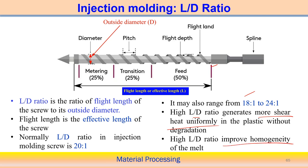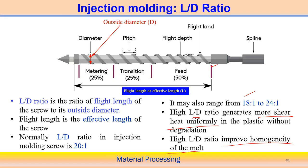The L/D ratio also improves the homogeneity of the melt — a higher value helps maintain uniform shear heating and uniform melting. The screw has three zones: the feeding zone accounts for about 50% of the total length, the transition zone around 25%, and the metering zone around 25%. This is the standard distribution of length associated with the screw in injection molding operations.